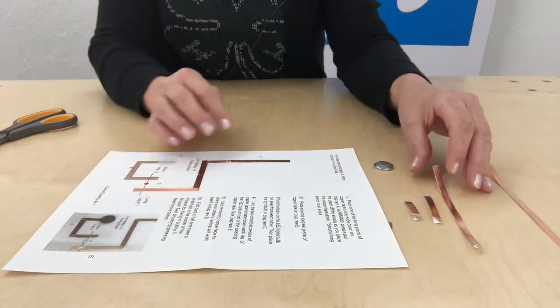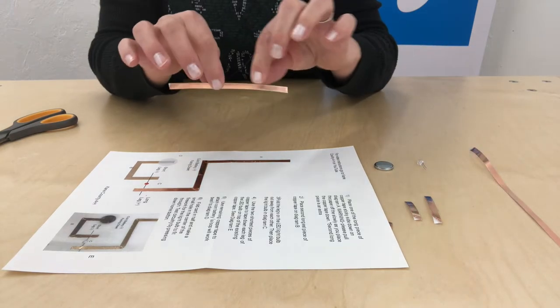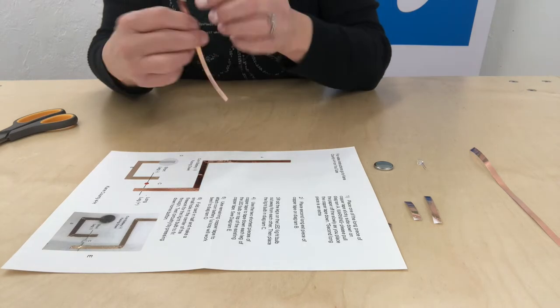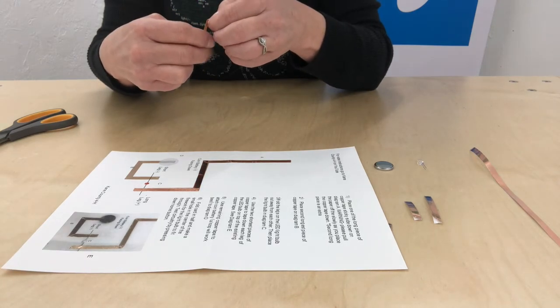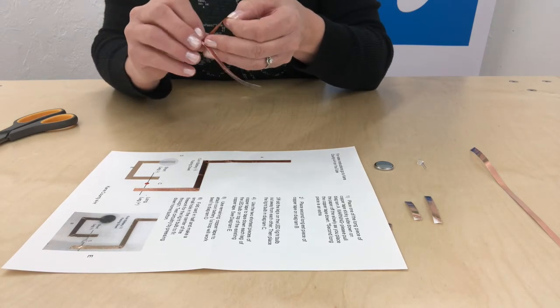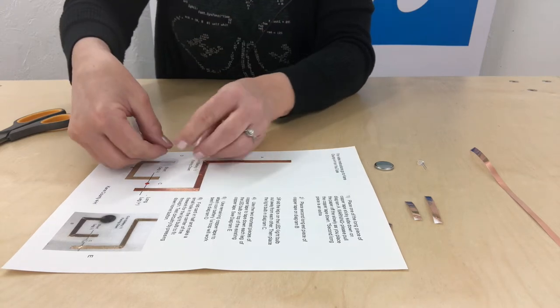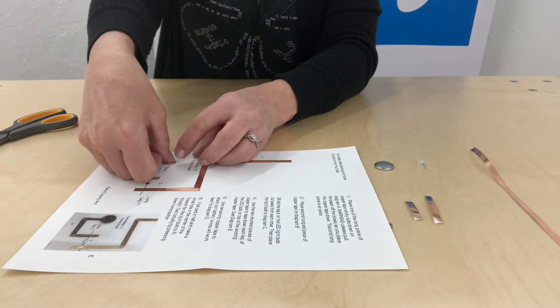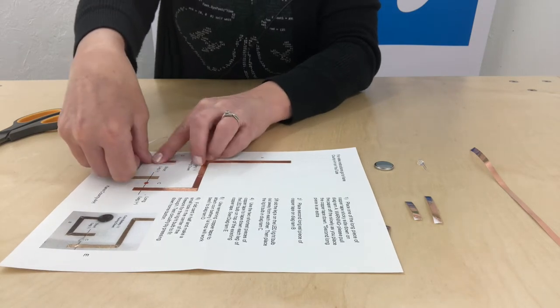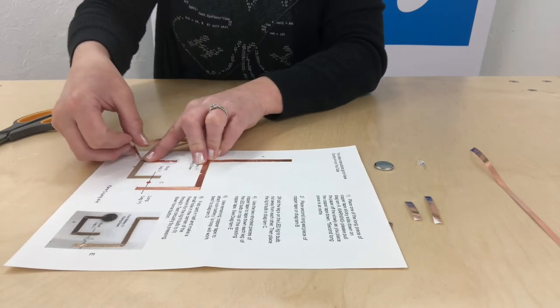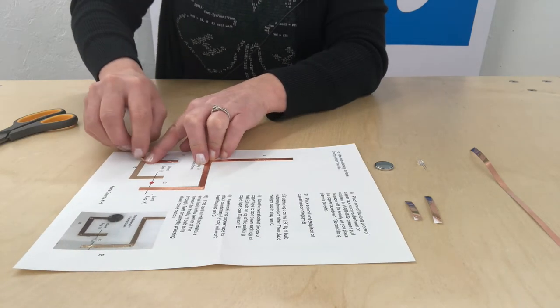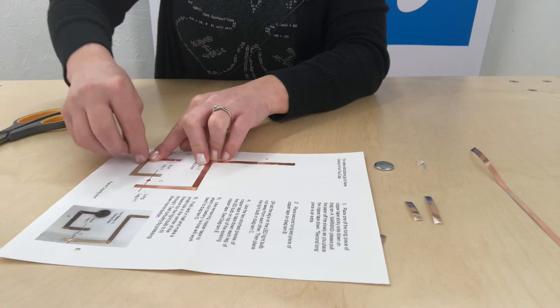We're going to take the next piece of copper tape and follow diagram B, doing the same thing. Remember to press it down as you go. And it does not have to be perfect. If you have creases in it, that's okay, as long as you don't have any breaks in it.